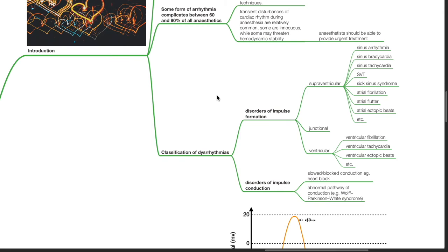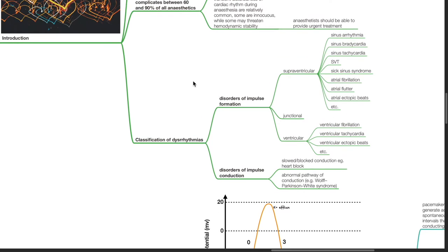Classification of dysrhythmias can be classified as disorders of impulse formation or disorders of impulse conduction. Examples of disorders of impulse formation include supraventricular arrhythmia such as sinus arrhythmia, sinus bradycardia, sinus tachycardia, SVT, sick sinus syndrome, atrial fibrillation, atrial flutter, and atrial ectopic beats.